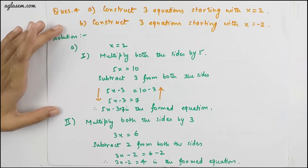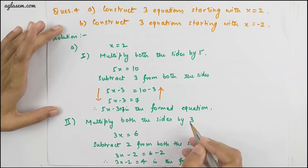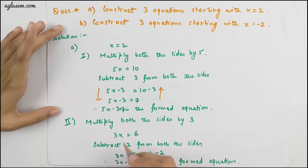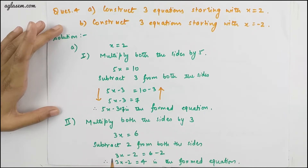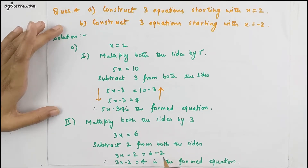Second equation: multiply both sides by 3, giving 3x = 6. Subtract 2 from both sides: 3x − 2 = 6 − 2. Therefore the equation 3x − 2 = 4 is formed.